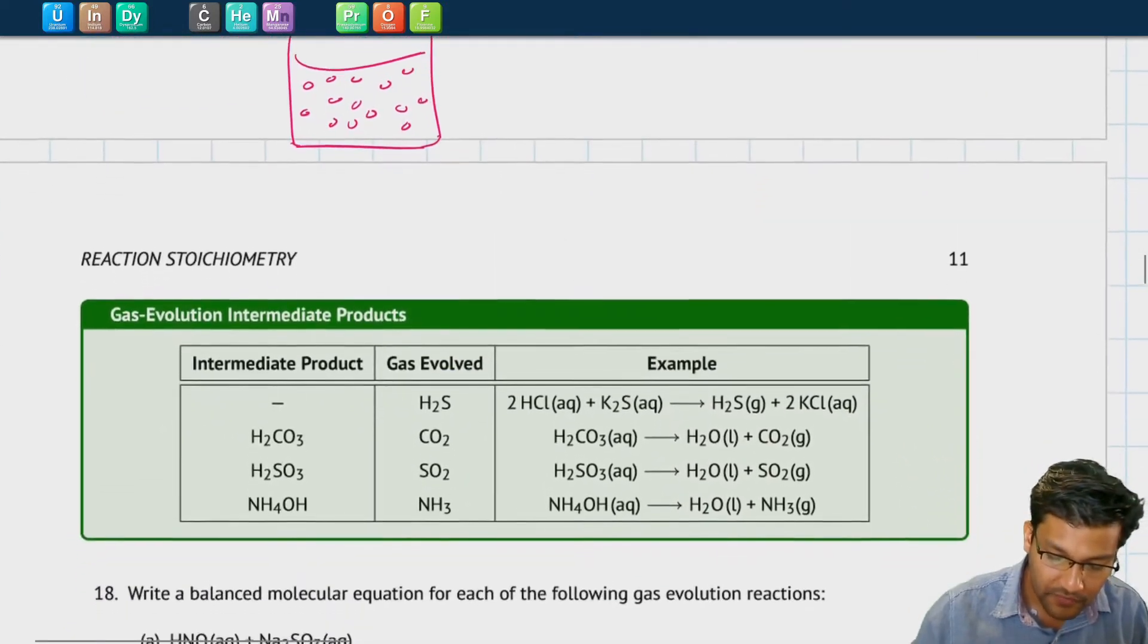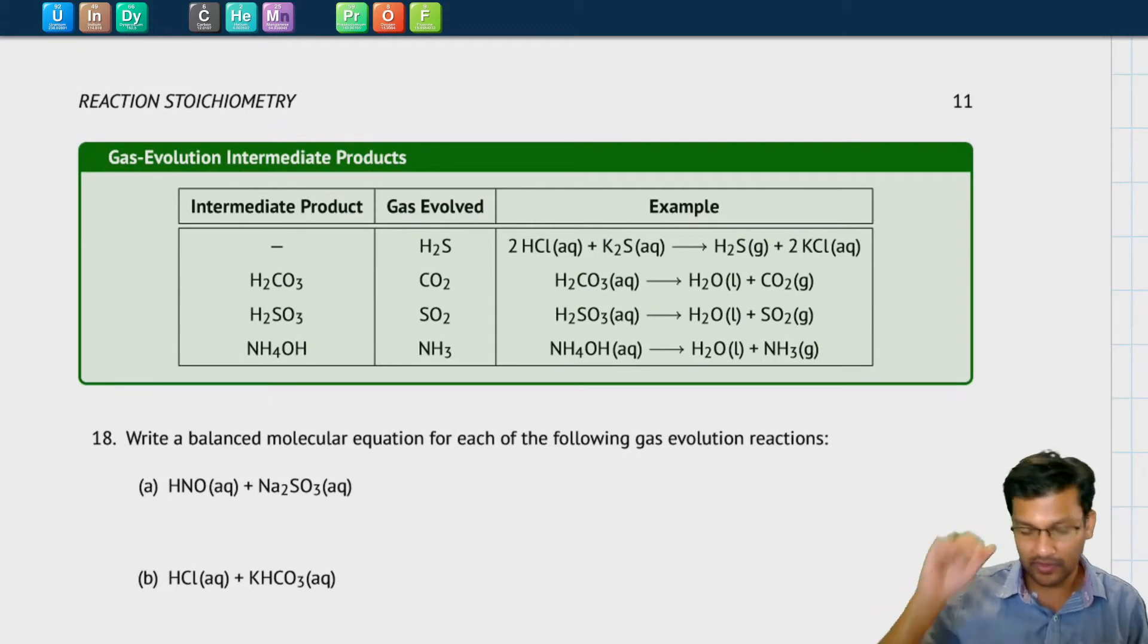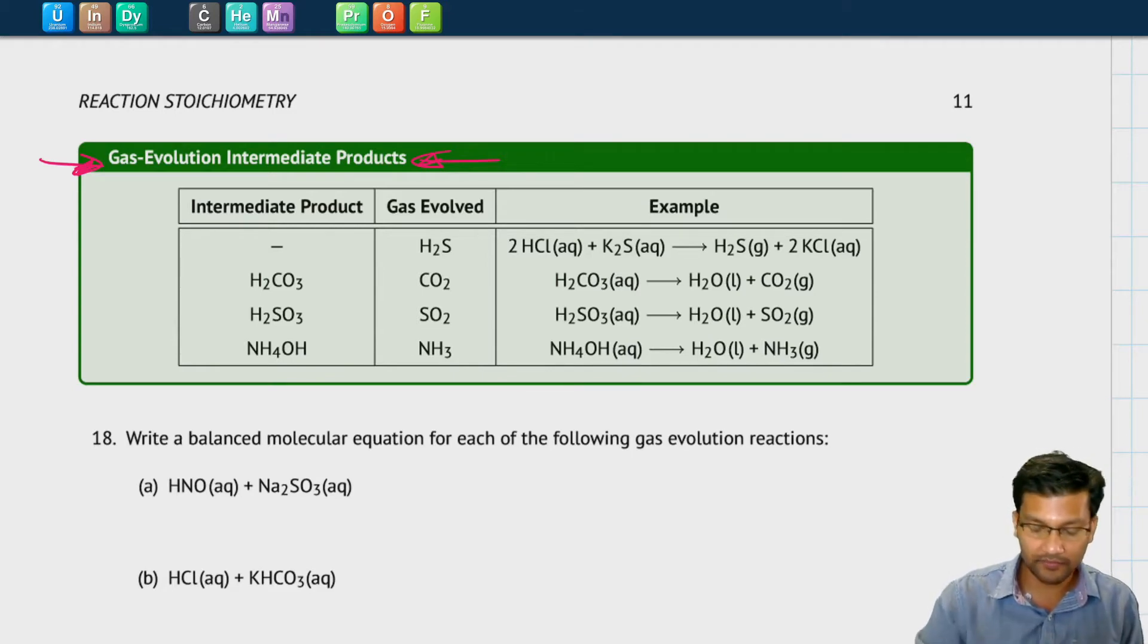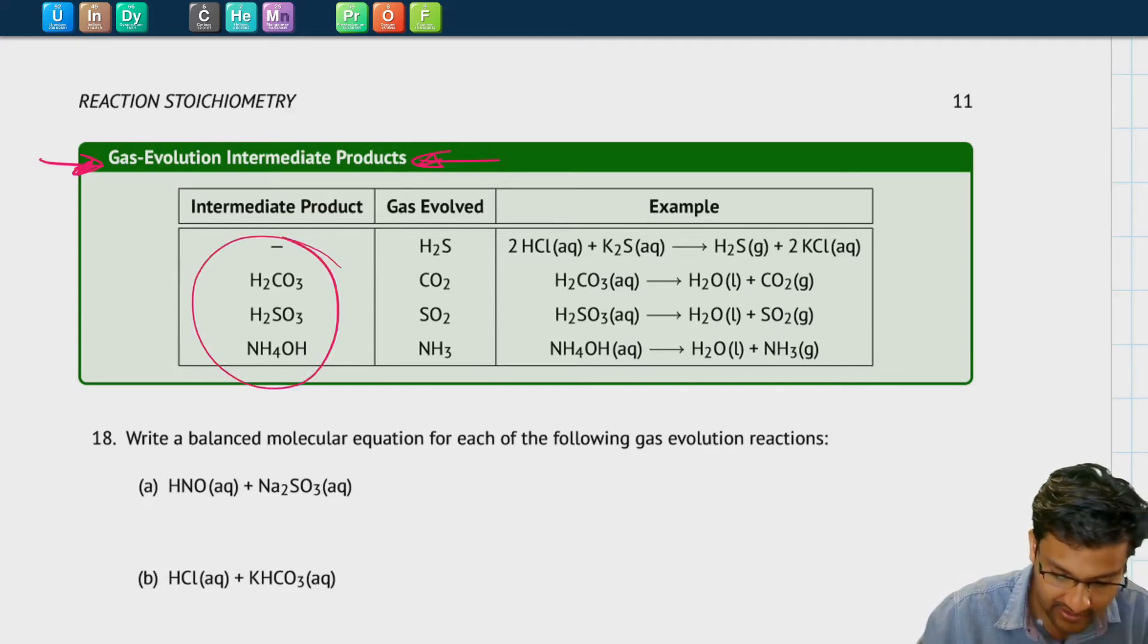Now there are a few gases in reactions that I want us to pay attention to and they're given here in this table. What this table is showing us is the different kinds of gases that we have and oftentimes they're formed from some sort of intermediate. So I want us to focus on these intermediates.